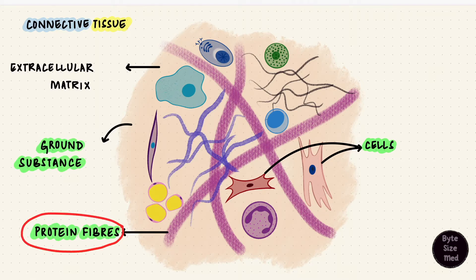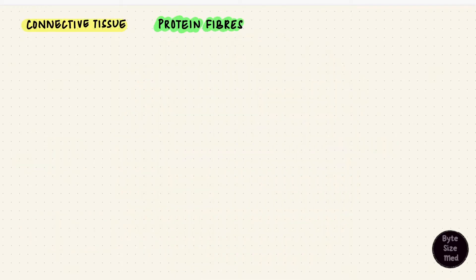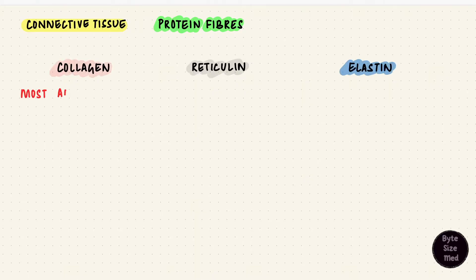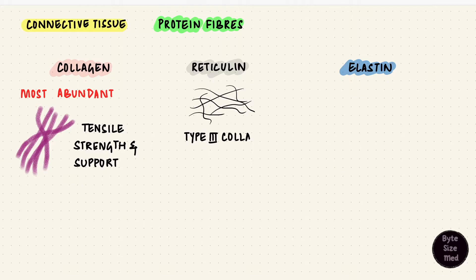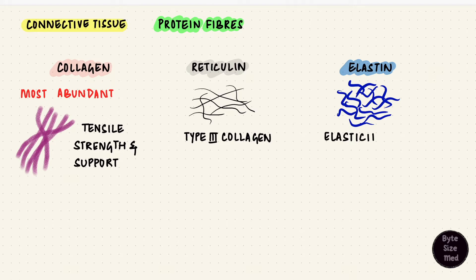The fibers are made up of proteins, and there are three main types: collagen, reticulin, and elastin. Of these, the most abundant is collagen, making it the most abundant protein in the body. It's important for tensile strength and support. Reticulin is basically a type of collagen, just finer and more delicate. Elastin is stretchy — it can stretch and return to its original shape. Elasticity.